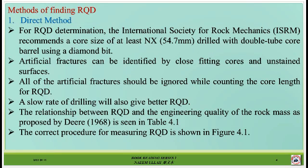Methods of finding RQD. Number one: the direct method. For direct RQD determination, the International Society for Rock Mechanics recommends a core size of at least NX — 54.7 millimeters — drilled with a double tube core barrel using a diamond bit. Artificial fractures can be identified by close-fitting cores and fresh unweathered surfaces; all artificial fractures should be ignored while counting the core length for RQD. A slow rate of drilling will also give better RQD.